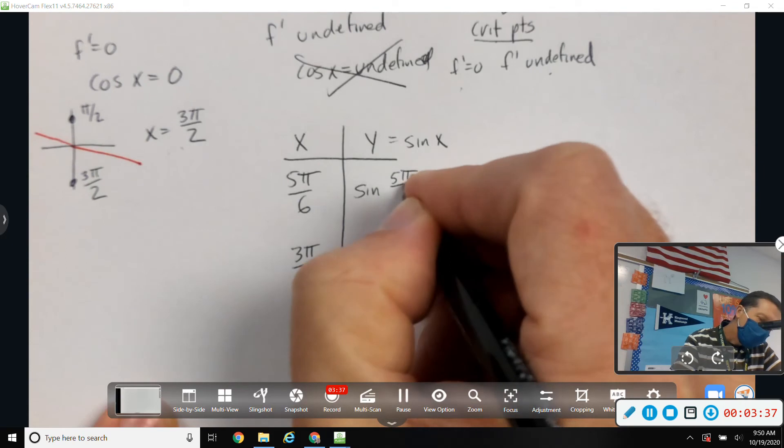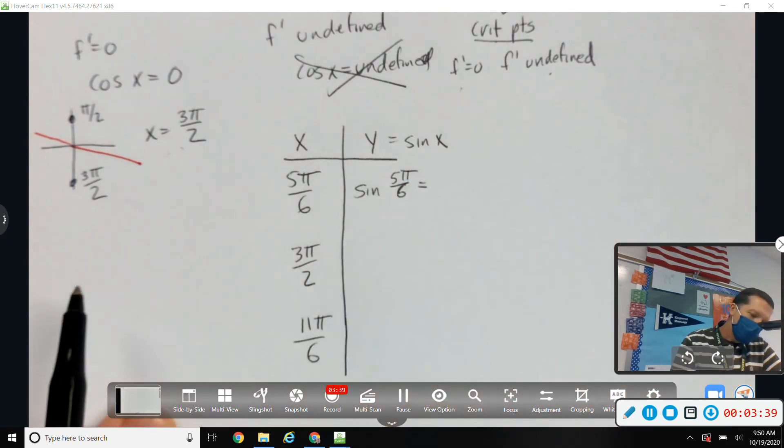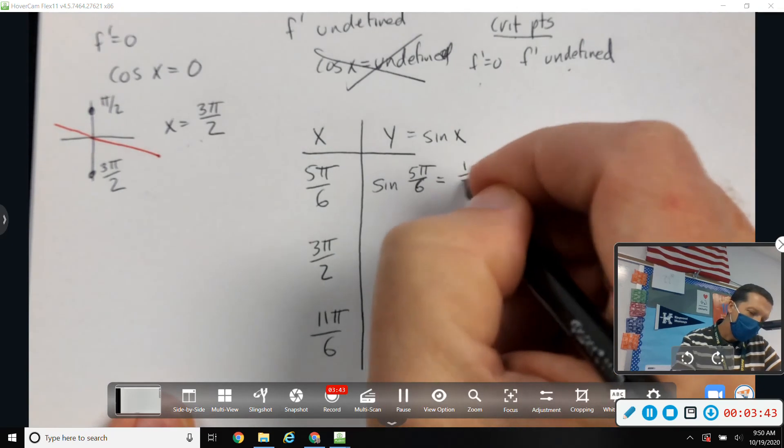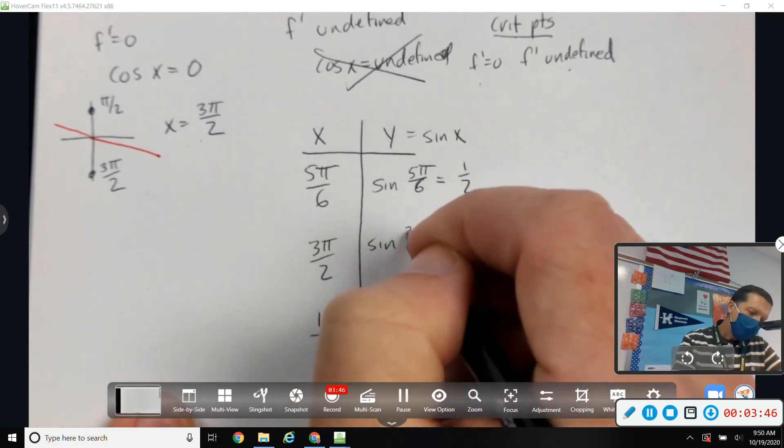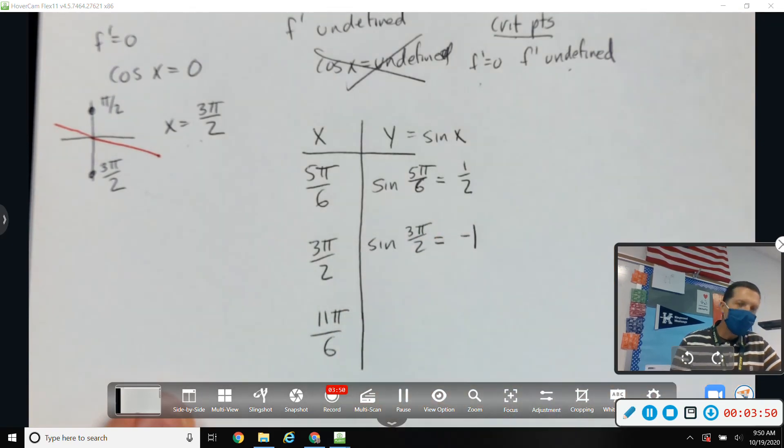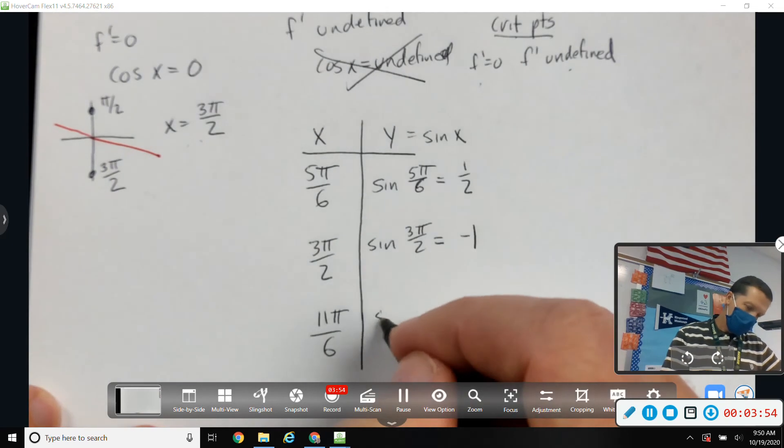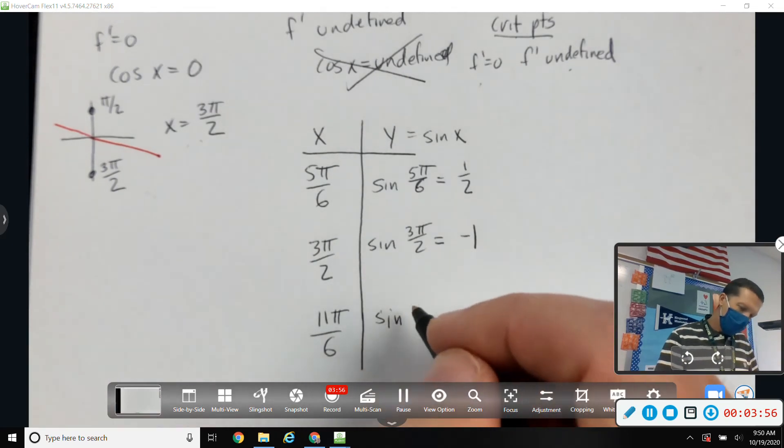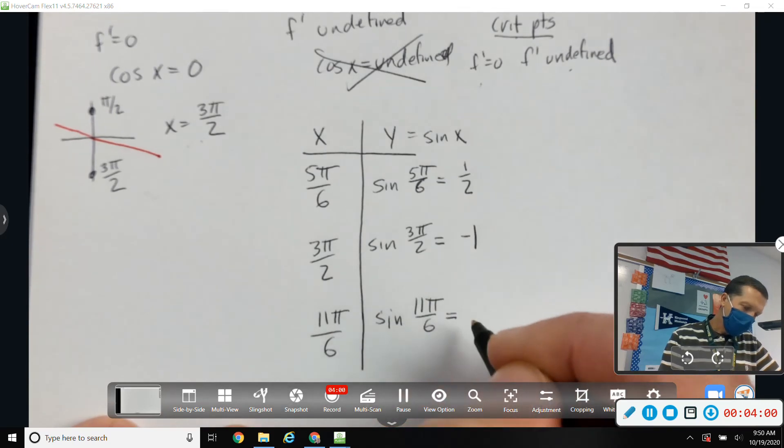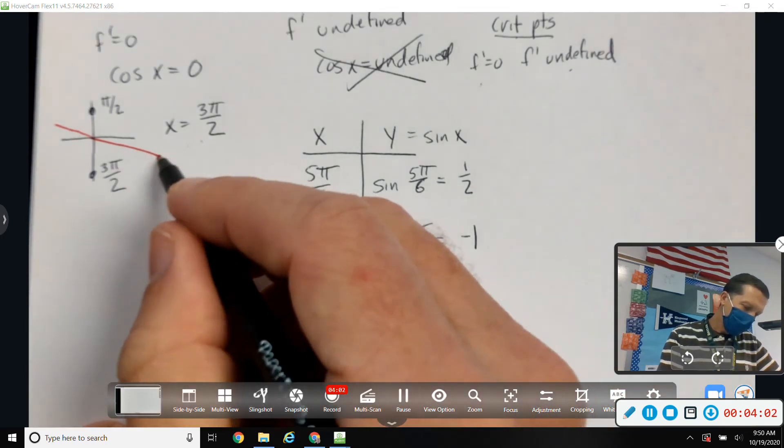So sine of five pi over six. It's helpful that I have the graph already right there. That would be one half. Sine of three pi over two would be negative one, because sine is the up and down value. And sine of eleven pi over six is negative one half.